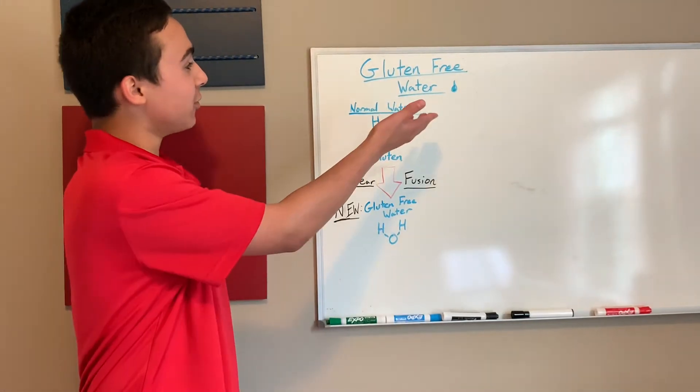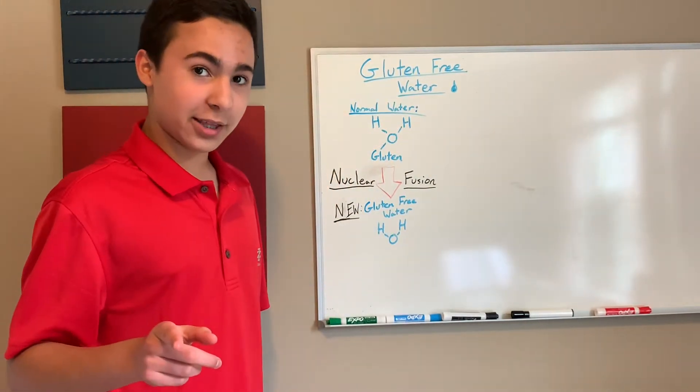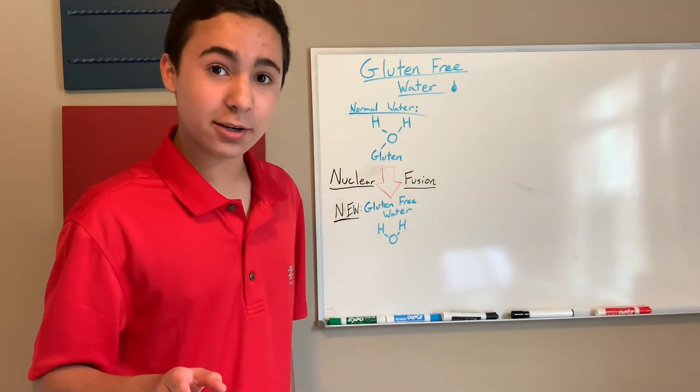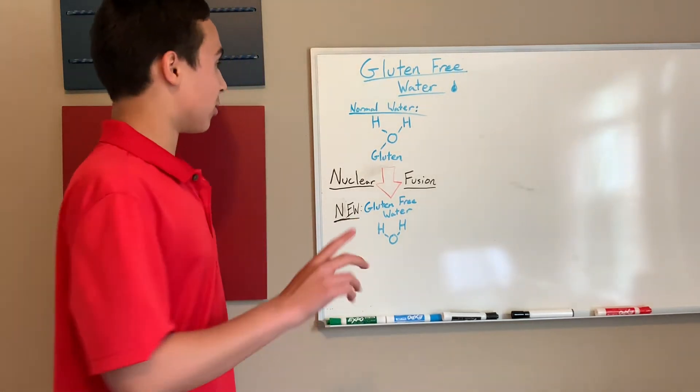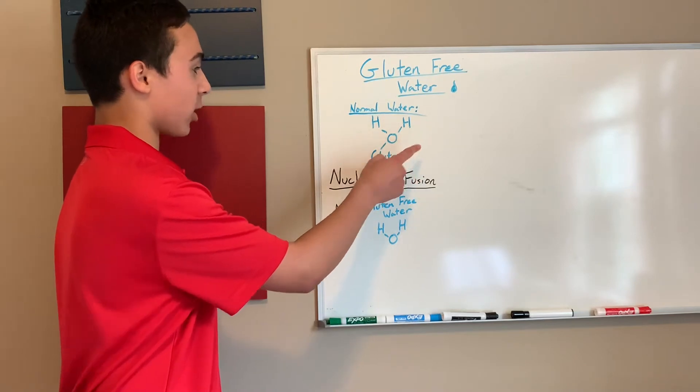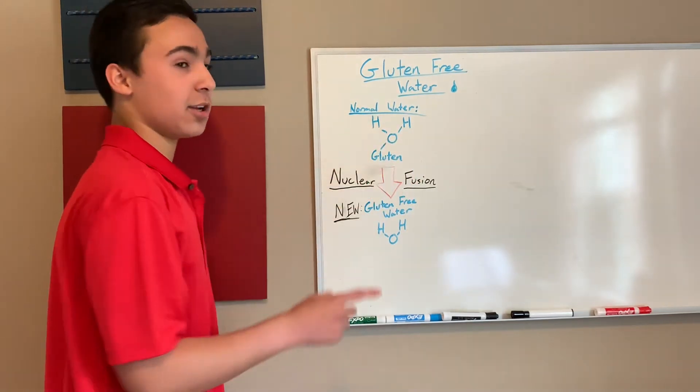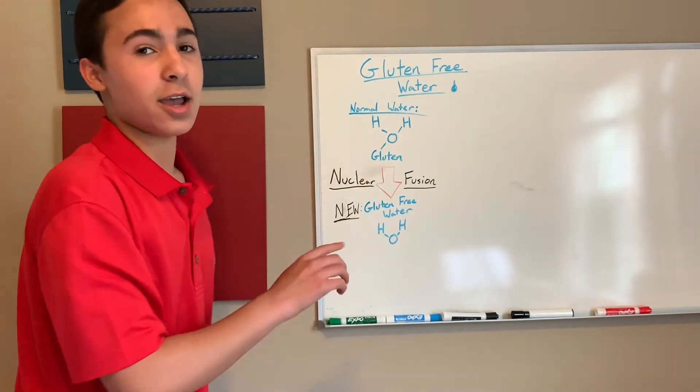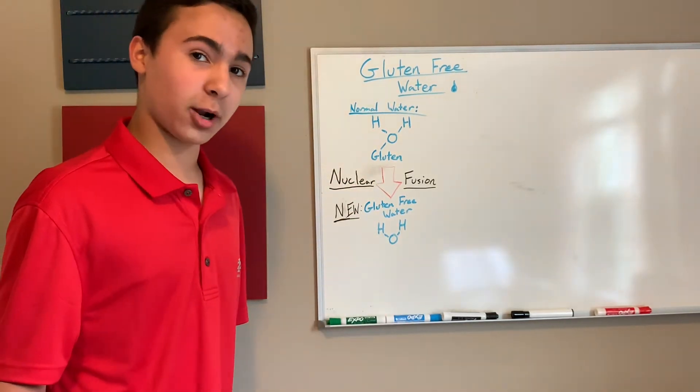Our first product today is called gluten-free water. Now you might be thinking, there's no gluten in water, but you'd be wrong because there is. And I'll explain it to you. First, we have a particle of normal water. It's got two hydrogens and one oxygen, but what they don't tell you is there's a secret particle called gluten in there, and that makes it gluten water instead of gluten-free water.